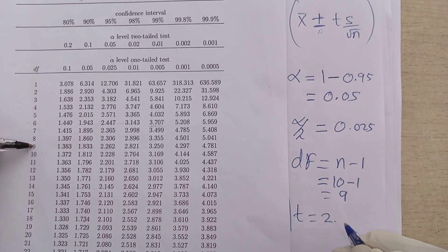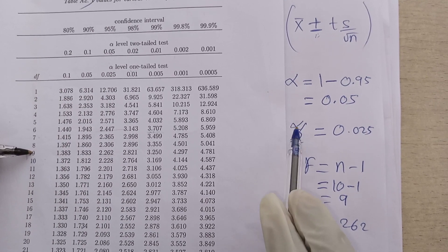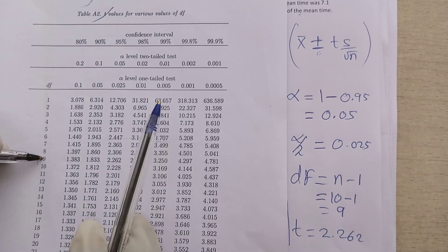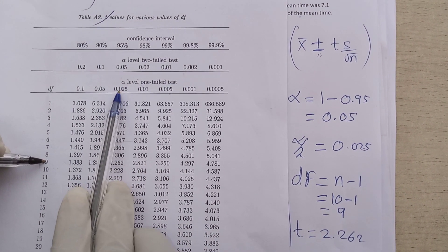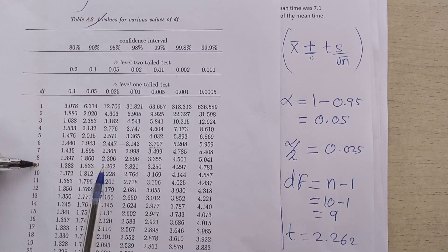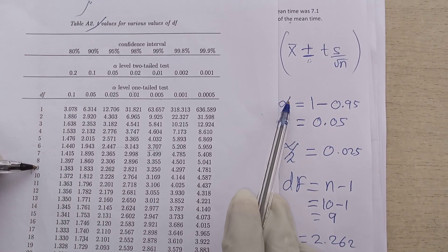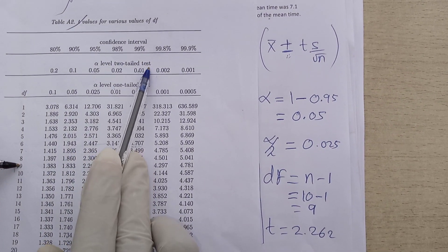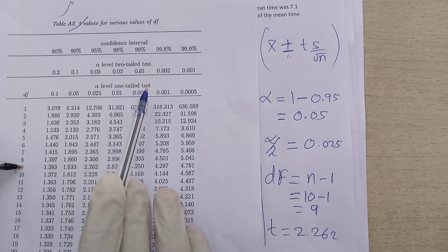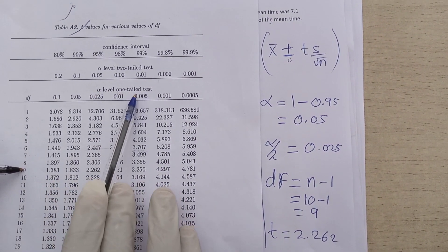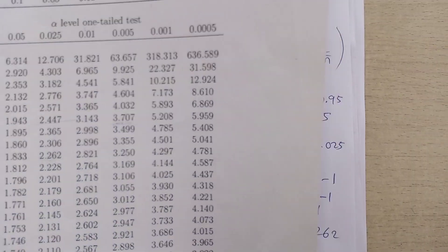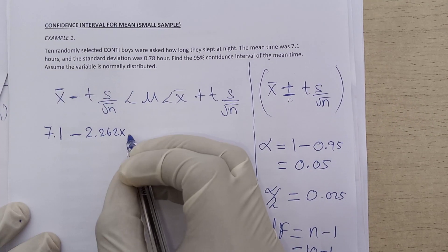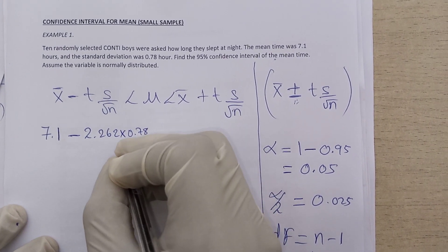So the t-value is 2.262. Be careful: if you use alpha divided by 2 (which is 0.025) to look it up, you must check under 'one-tailed test'. Either way, you get the same answer. When using alpha, always check under two-tailed test; when using alpha divided by 2, check under one-tailed test. Our t-value is therefore 2.262.